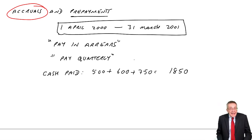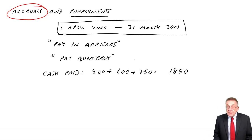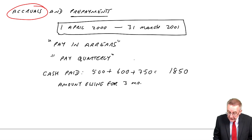Now that's all he's paid. But of course, he's only paid up to the end of December, 2000. His year goes to March. And so he's still owing for three months. And so the total expense, we need to add on those three months.